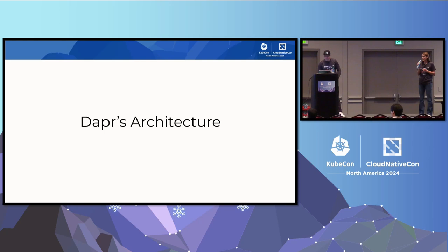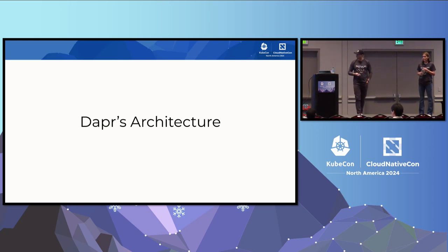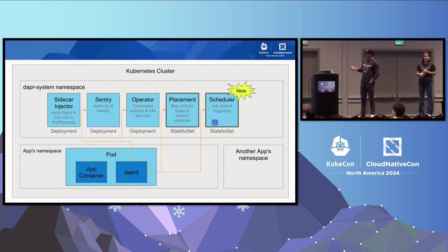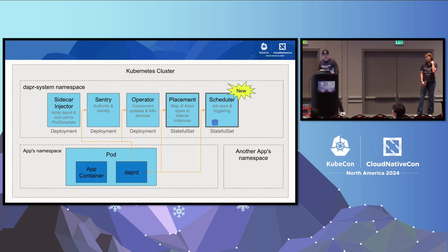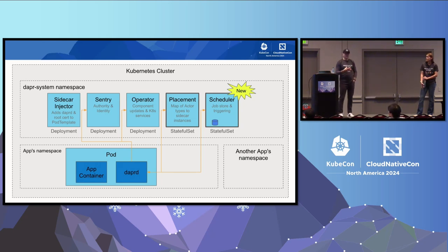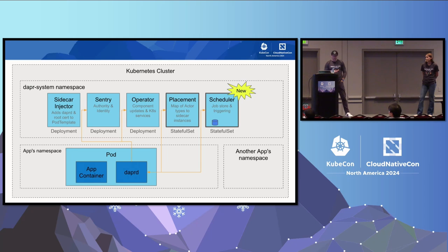Now DAPR's architecture — this presentation will be most focused on running DAPR on Kubernetes. Imagine you have a Kubernetes cluster. DAPR is installed in the DAPR system namespace. There are a few control plane services: one is a sidecar injector, which is a mutating webhook that modifies the pod template to inject a DAPR sidecar with the correct configurations based on your annotations on your deployment, or also a job or a stateful set.